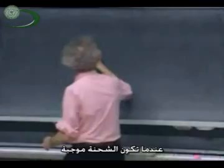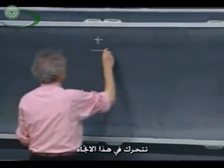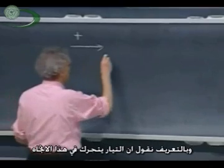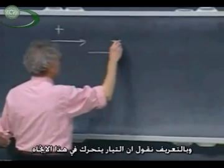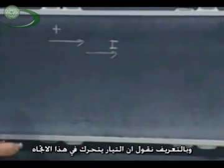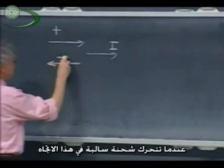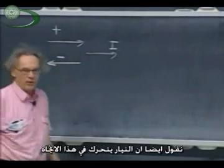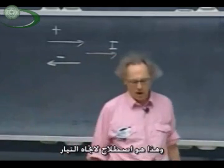When positive charges move in this direction, then per definition, we say the current goes in this direction. When negative charges go in this direction, we also say the current goes in that direction. That's just our convention.